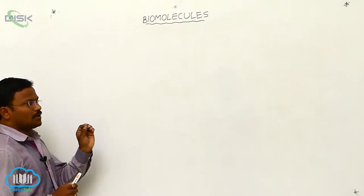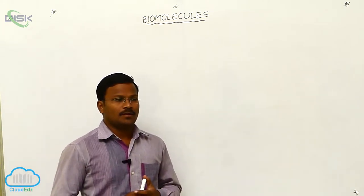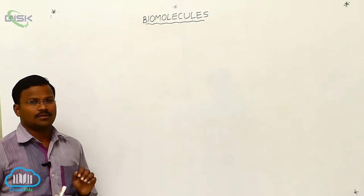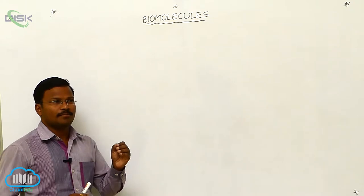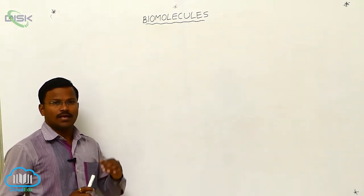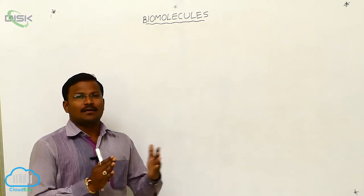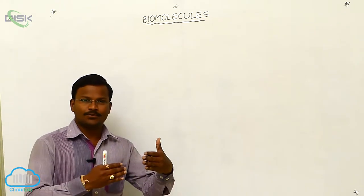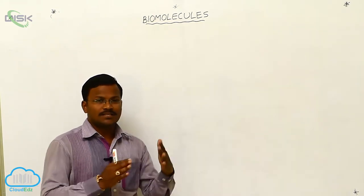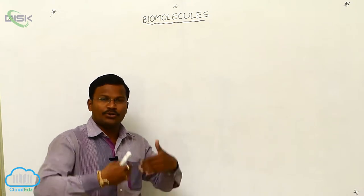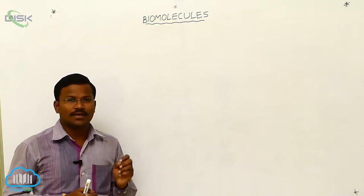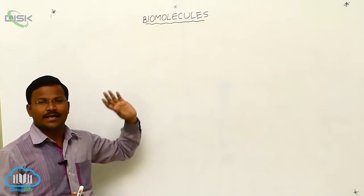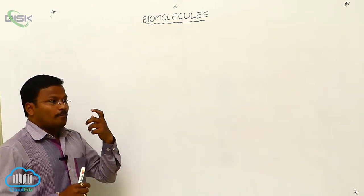A little bit of topic left from the concept of carbohydrates from the previous class. From the category of disaccharides — sucrose, maltose, and lactose — sucrose is made up of alpha-D-glucose and beta-D-fructose. It is called a non-reducing sugar because the C1 position of alpha-D-glucose is connected to the C2 position of beta-D-fructose, with no regeneration of carbonyls. This is why sucrose cannot reduce Fehling's solution or Tollens' reagent.